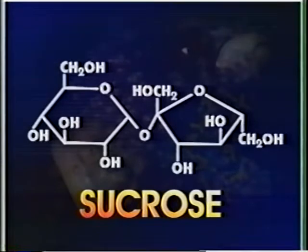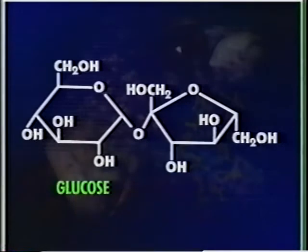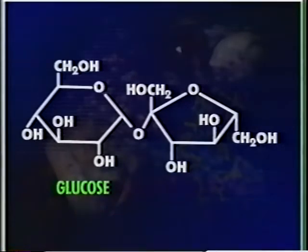Sucrose, C12H22O11, or table sugar, is obtained from sugarcane or sugar beets. It consists of one glucose molecule and one fructose molecule.